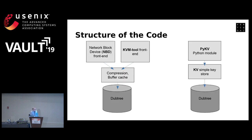To make this usable for day-to-day workloads, the first thing I added when I ported it to Linux was an NBD — Network Block Device — front end, which is a fairly simple way to hook block IO in Linux. I also added a KVM tool front end — KVM tool is a lightweight virtualization alternative to QEMU, so you can run VMs. You can format this file system with something like XFS and run a VM over it. There's a layer in the code that does compression of the incoming data, a buffer cache, and then finally the LSM-like data structure at the bottom.